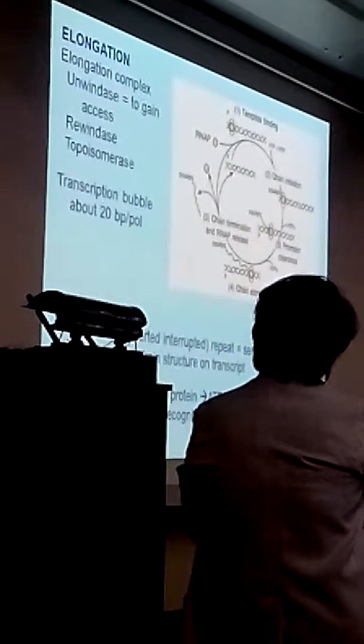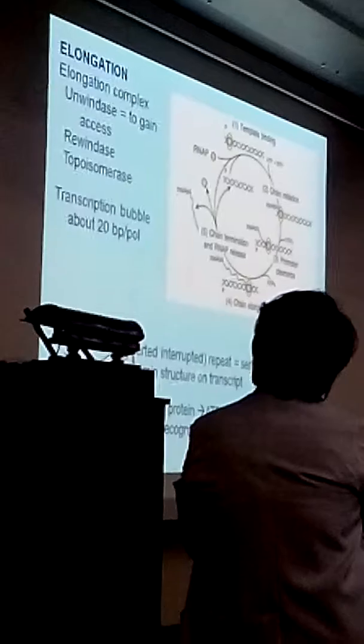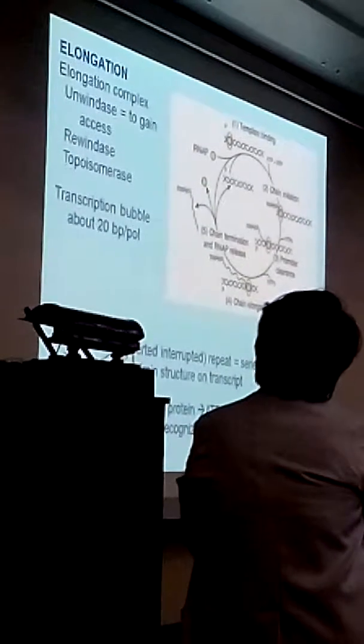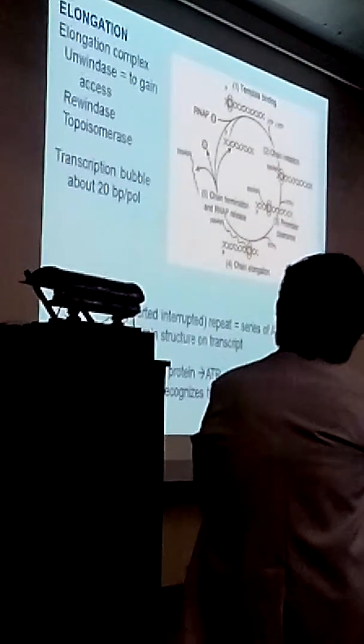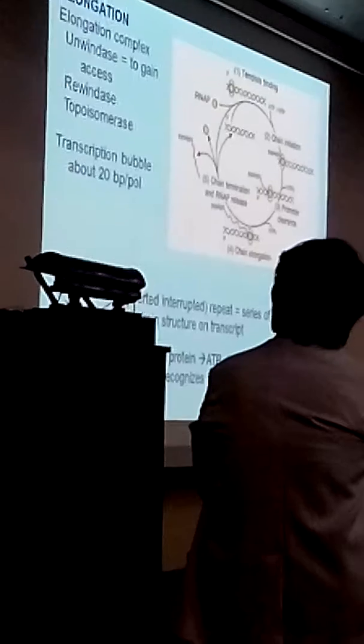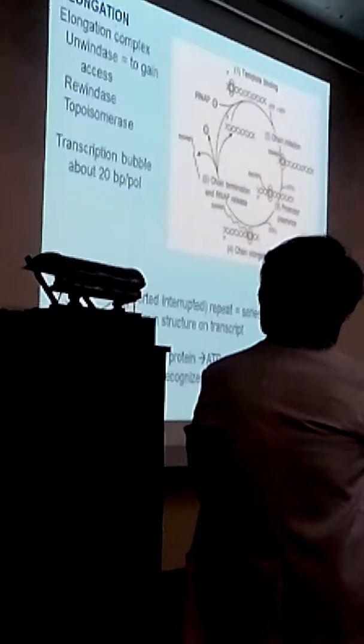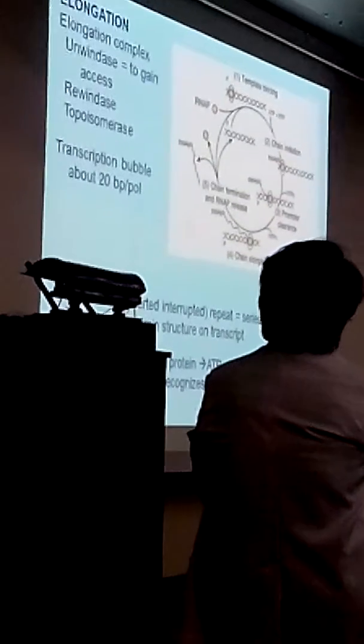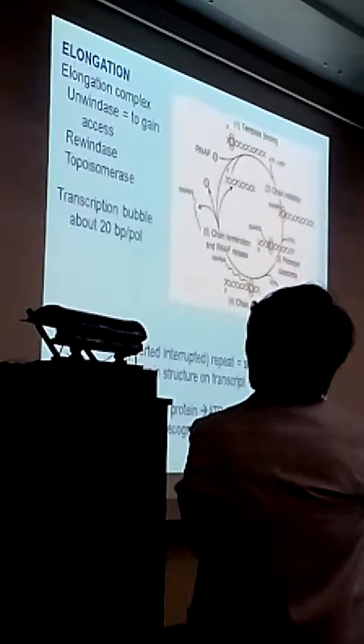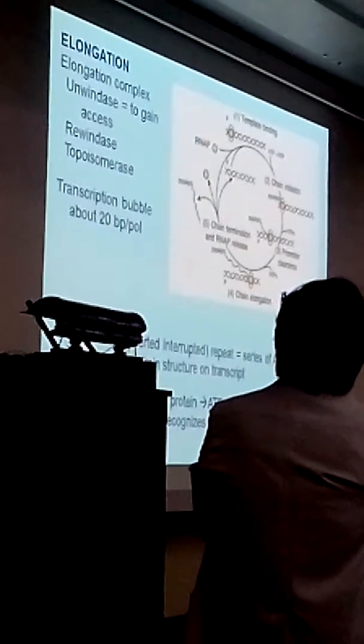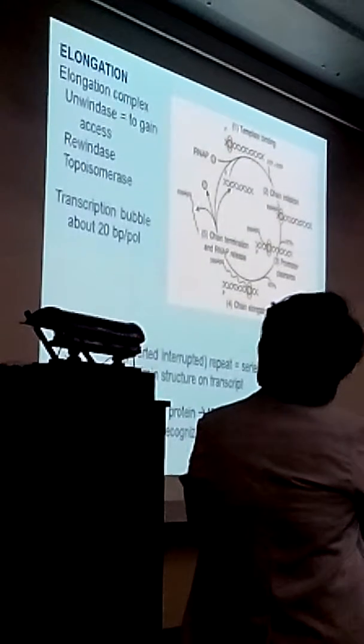Termination will happen in two ways. The presence of the inverted interrupted repeat, or a GC-rich region. Or the presence of another factor, the Rho protein or the Rho factor which results in transcription termination. It has a very long name, ATP-dependent RNA DNA helicase. Recognizes the termination element and brings about termination of transcription and the release of your nascent RNAs.